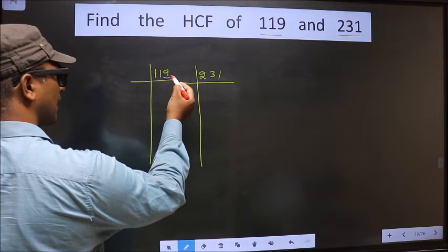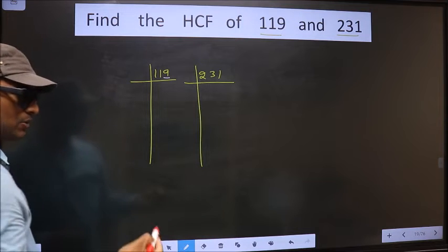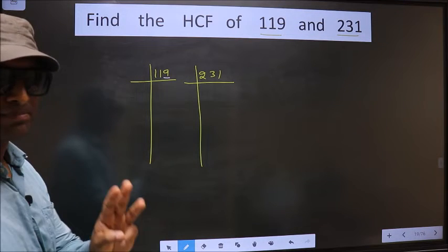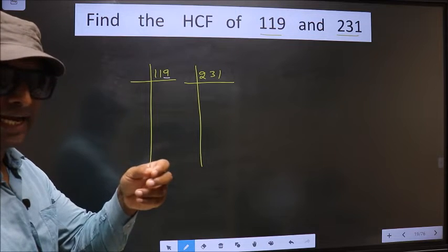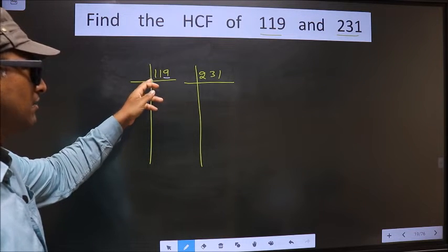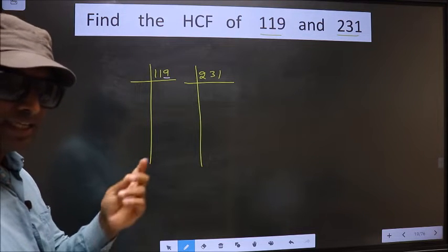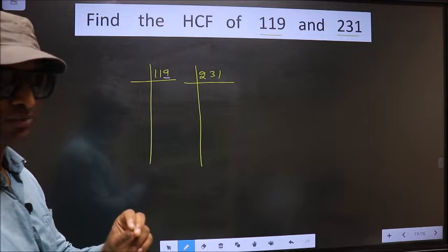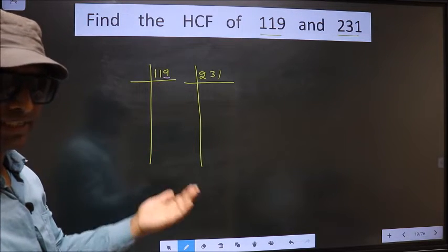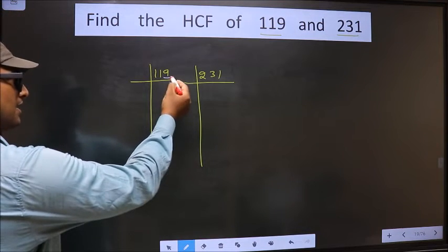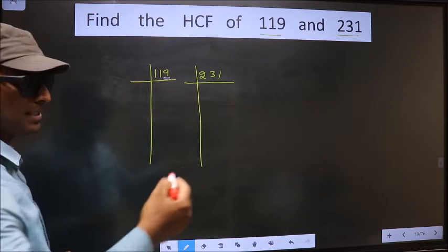For this number, the last digit is 9 which is not even, so this number is not divisible by 2. Next prime number, 3. To check divisibility by 3, we should add the digits: 1 plus 1 plus 9, we get 11. Is 11 divisible by 3? No. So this number is also not divisible by 3. Next prime number, 5. The last digit is neither 0 nor 5, so this number is not divisible by 5.